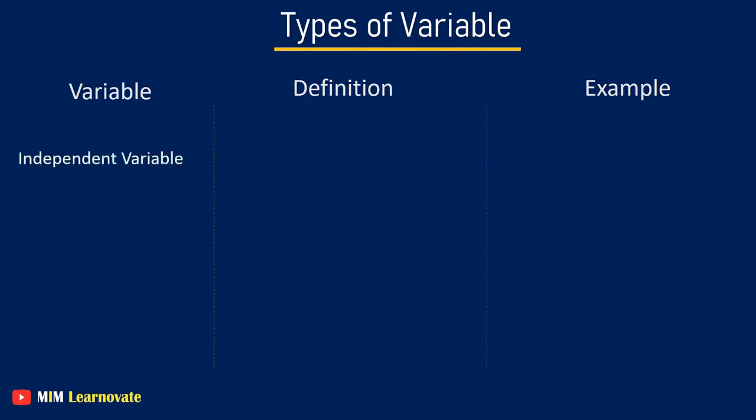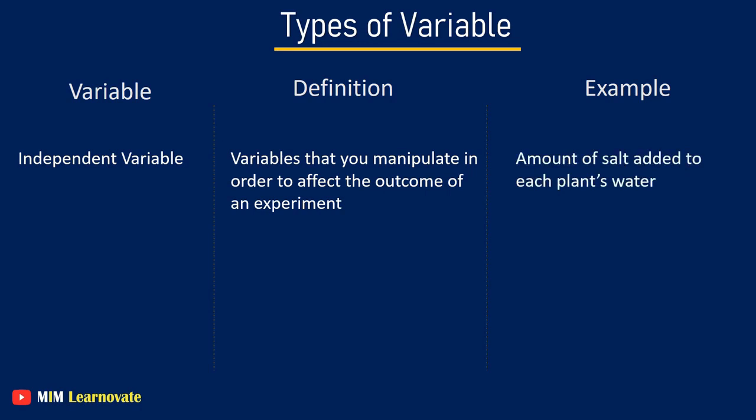Independent variable. An independent variable is a variable that you manipulate in order to affect the outcome of an experiment. For example, the amount of salt added to each plant's water.